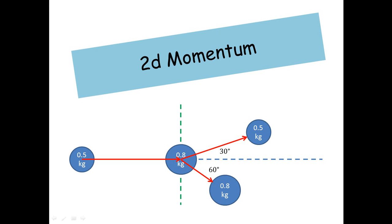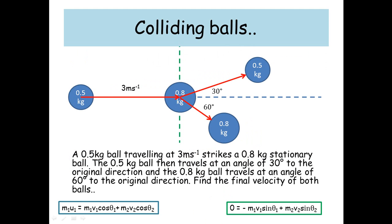Hi guys, today we're going to look at a problem in two dimensions with momentum. A 0.5kg ball travelling at 3m per second strikes a 0.8kg stationary ball. The 0.5kg ball then travels at an angle of 30 degrees to the original direction, and the 0.8kg ball travels at an angle of 60 degrees to the original direction. Find the final velocity of both balls. We're going to use two equations here.